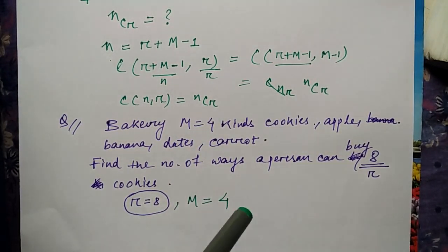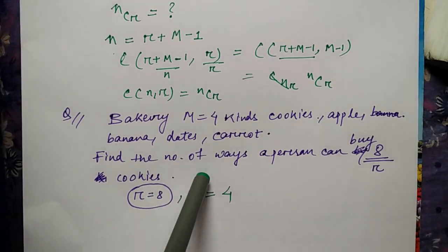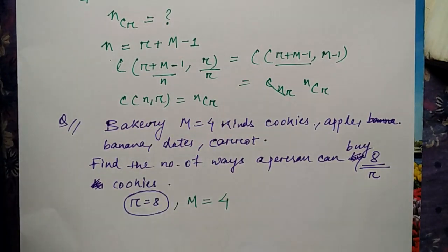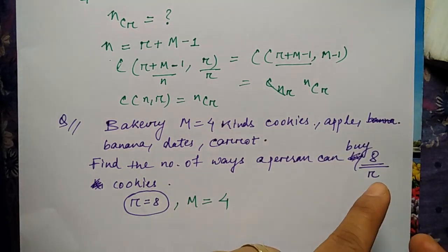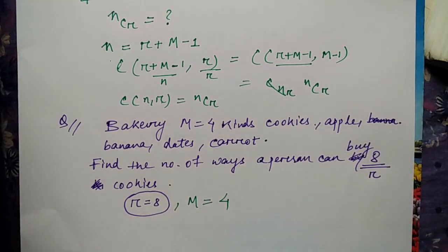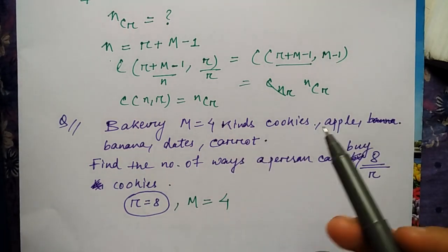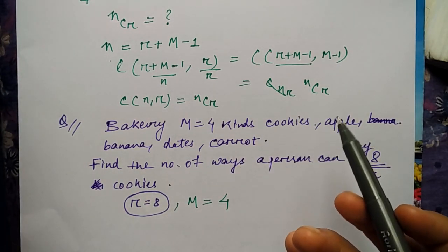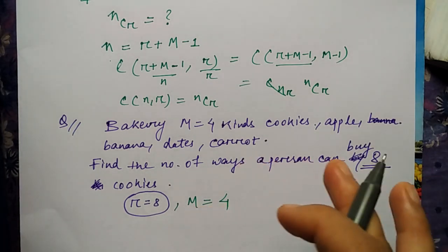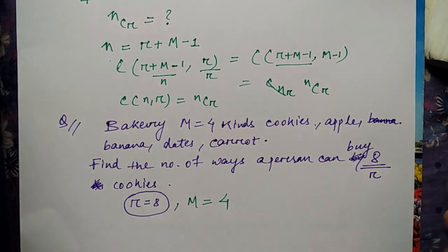Why am I saying that this is a case of repetition? Because you already have four types of cookies and you want to buy eight. So when you want to buy eight out of four, it means some of the cookies you are repeating, right? Either you are taking one cookie twice or one cookie thrice, and some cookie you are not taking at all.